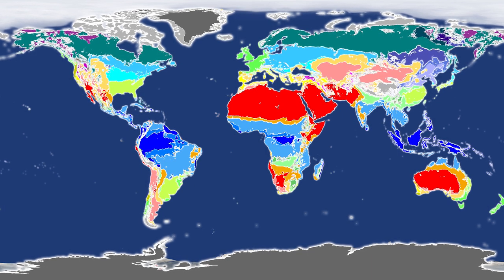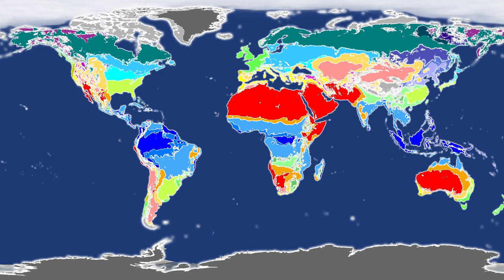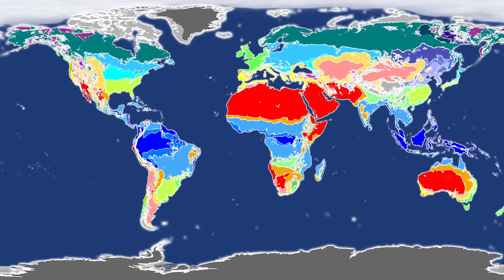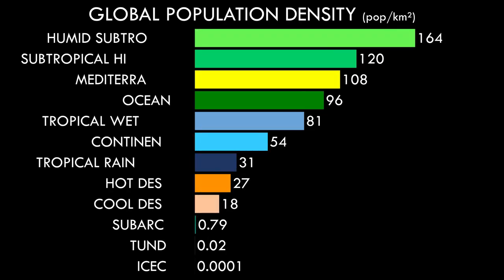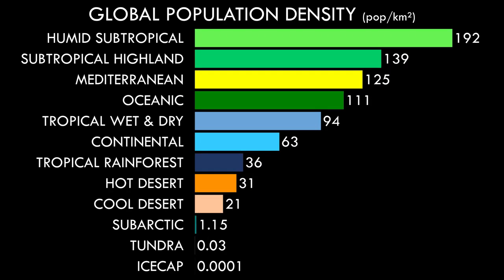With all our zones now calculated, let's perform an overall comparison in our final graphic, which is probably the most telling and interesting in all of the videos I have so far produced. In it we can see a clear relationship of how human habitability is affected by climate. The most densely populated zone, the humid subtropical, is two million times greater in density than that of the least, the ice cap – an enormous leap in terms of orders of magnitude. Most of these orders are consumed within the polar regions of the planet, leaving most climate zones in the same order of magnitude from the cool desert up.